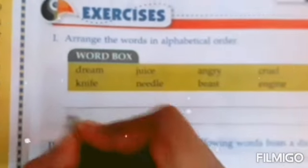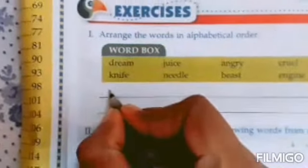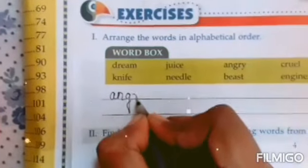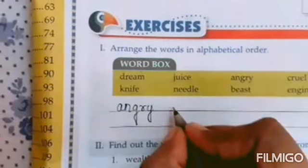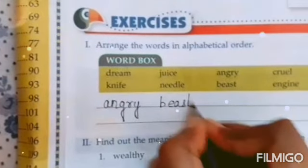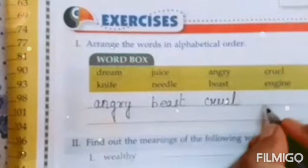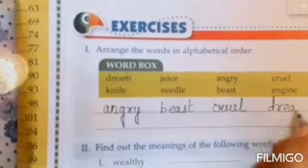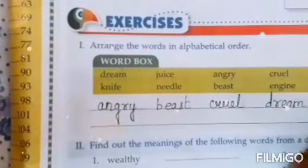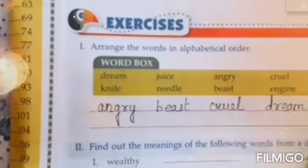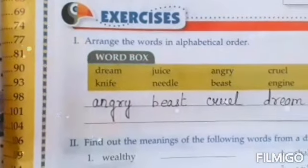Now let's do it. First what will come? Angry. Next, beast. Then cruel. Then engine. Then favorite.